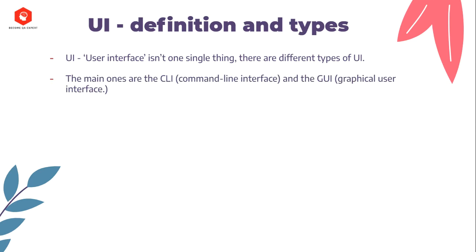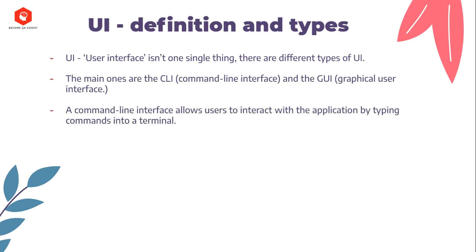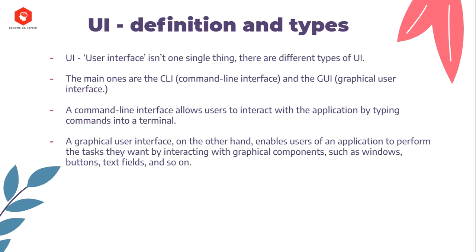The main types are CLI and GUI user interfaces. Command line interface allows users to interact with the application by typing commands into a terminal. On the other hand, a graphical user interface enables users of an application to perform the task they want by interacting with graphical components such as windows, buttons, text fields, and so on.